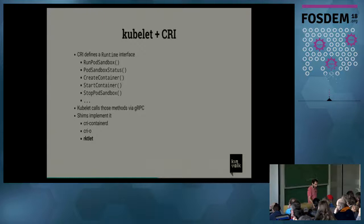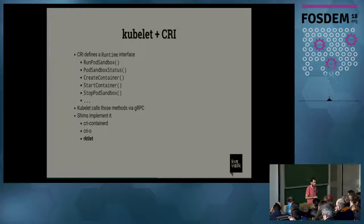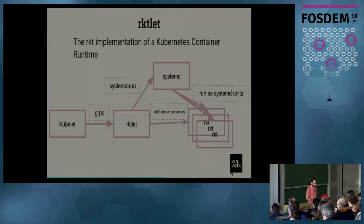The CRI defines an interface that container runtimes need to implement. Methods like RunPodSandbox to create an empty sandbox with no containers, then you can add containers, start containers, and stop containers — basically an interface that abstracts away container operations. The kubelet calls these methods via gRPC, and something on the other side of the gRPC connection implements that. CRI-ContainerD, CRI-O, and RocketLib are examples.